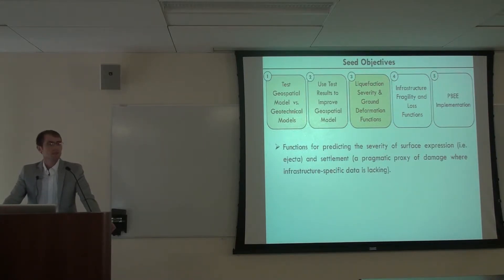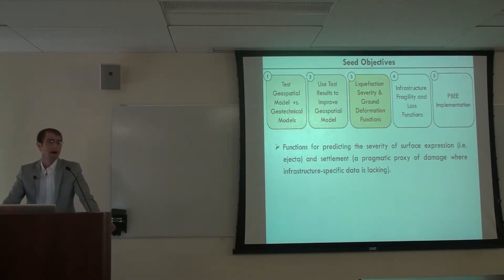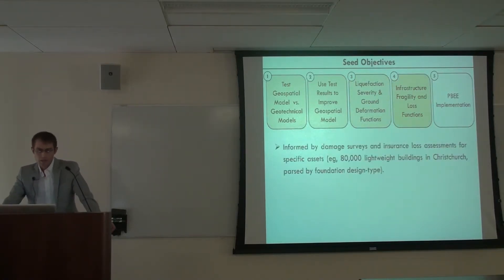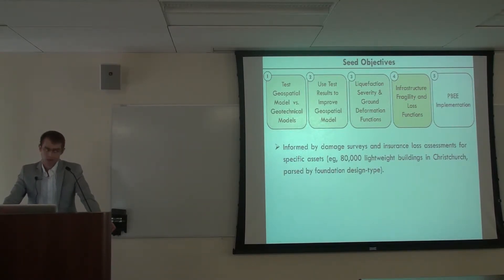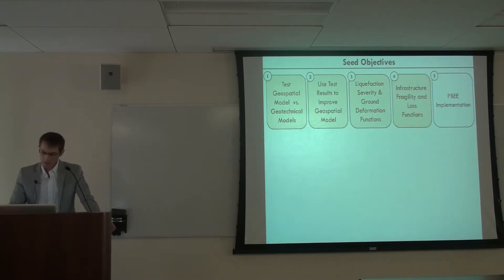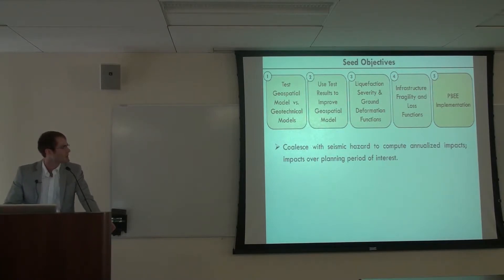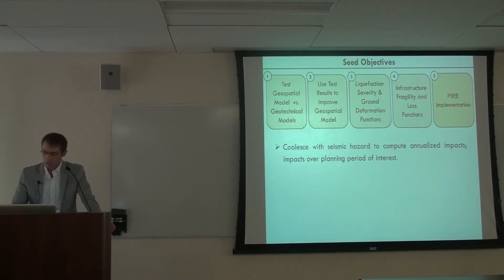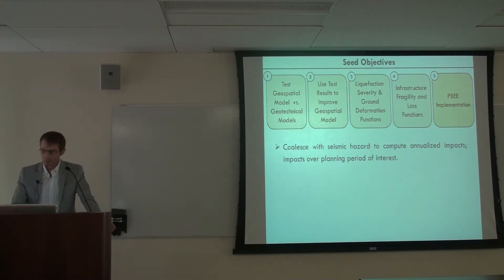With those improved models we'll predict the severity of ground deformation. In the absence of asset-specific data, ground deformation severity is a practical proxy for where infrastructure damage may occur. Where we do have asset-specific data from case studies, we'll develop fragility and loss functions — for example, using insurance assessments from 80,000 buildings in Christchurch. Finally, we'll implement these functions within the performance-based framework, convolving them with the seismic hazard curve to predict annualized effects or the probability of something happening during a planning period of interest.